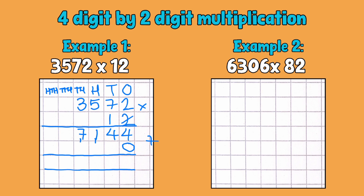Now here my answer is going to be multiplied by 10, so I can actually multiply this one by 1 because I've already done that in front of my answer. So 1 times 2 is 2, 1 times 7 is 7, 1 times 5 is 5, and 1 times 3 is 3. You can clearly see that 3572 ten times greater is 35,720.